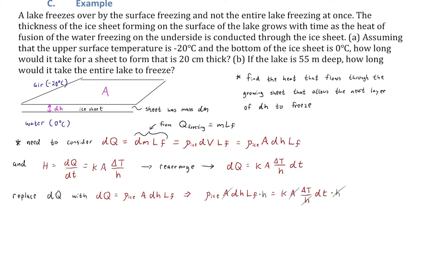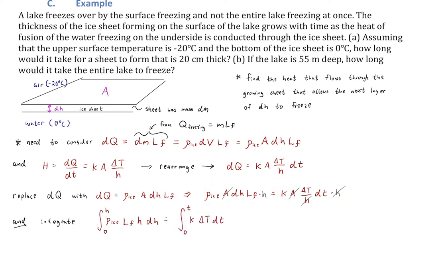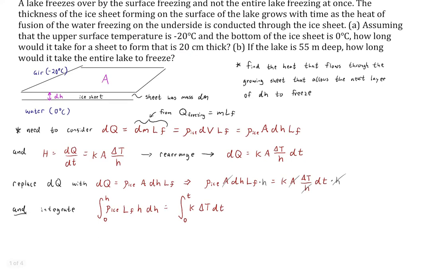After cross-multiplying by H, we integrate both sides. The left side has H·dH with constants ρ, A, and Lf, integrated from zero to H (since initially there's no ice and finally the thickness is H = 0.2 meters). The right side integrates dt, which simply becomes T (time). Both are straightforward polynomials with lower limit zero.